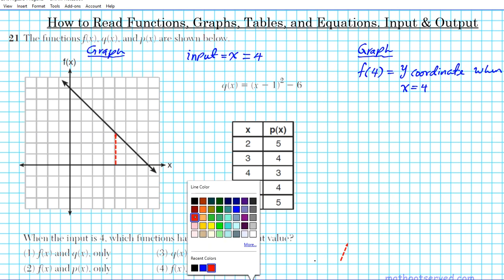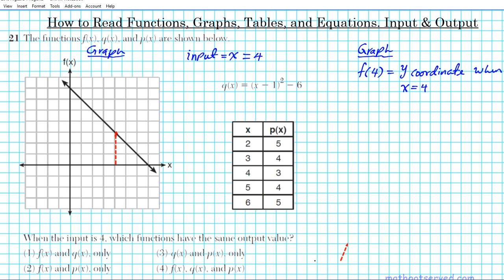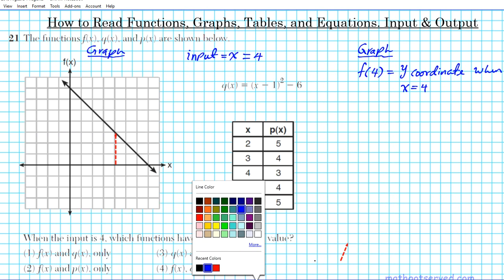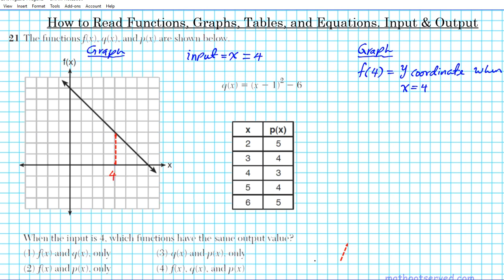Alright, so we start from 1 2 3 4, you trace it up since the function is above and you hit a point. Okay, now that point that you hit is an ordered pair. Every point on the graph has, on a two dimensional graph, has an x coordinate and a y coordinate. So we trace this value of x equals 4 which is the input. When you trace it to the graph you hit a point, this is a lattice point right here, nice pretty point for us.